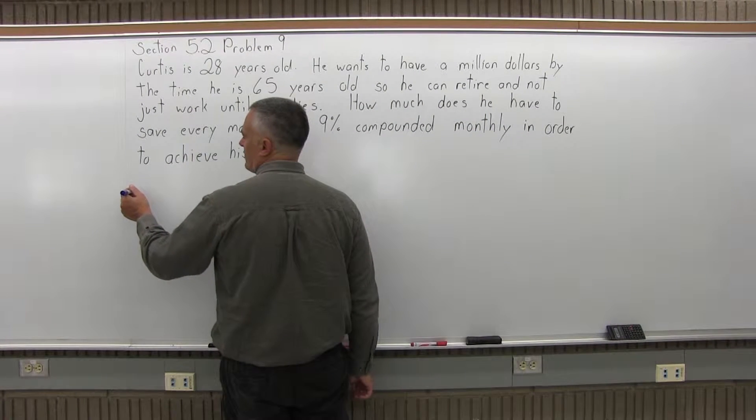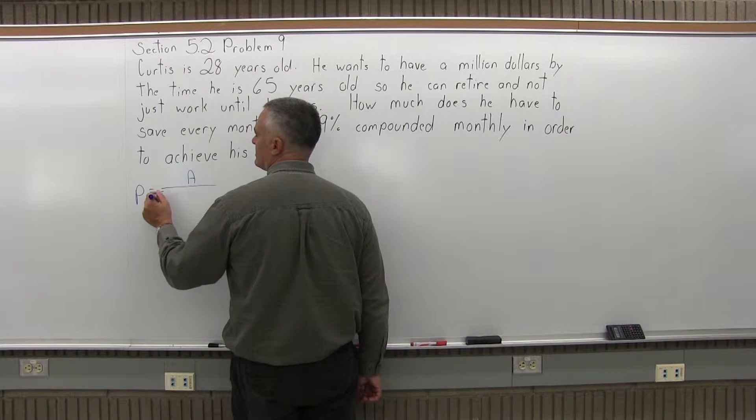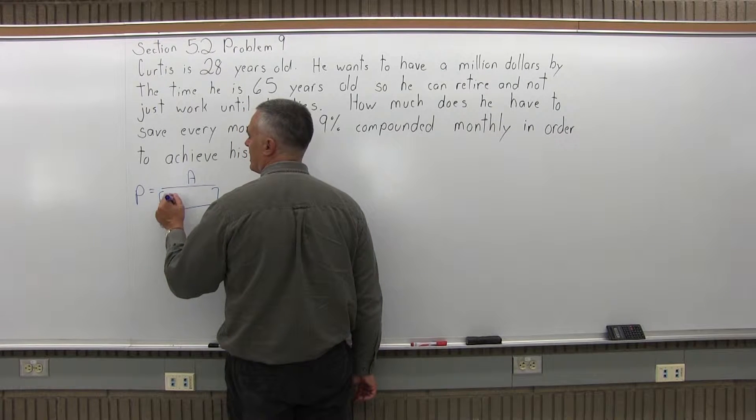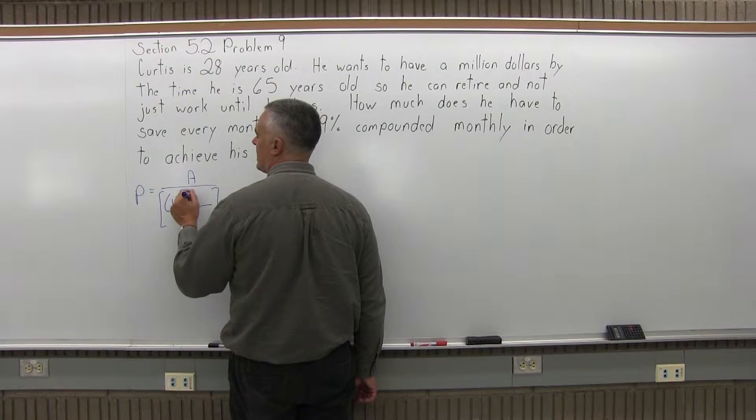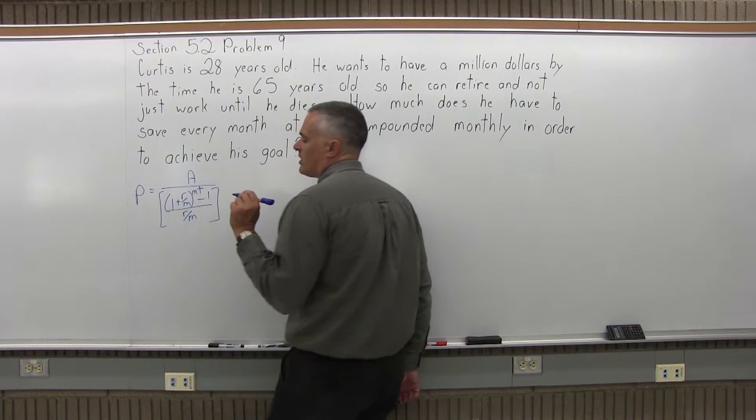So the sinking fund formula is P equals A over some brackets, and in the brackets there's a numerator and a denominator. In the numerator you have 1 plus r over m to the m times t power. There's a minus 1 after that and r over m in the denominator of the brackets.